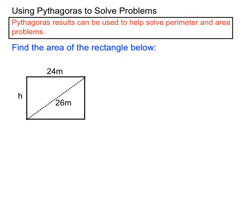This time we'll have Pythagoras helping us to find the area of this rectangle down here. Now we've got the length of the rectangle, 24 metres, and we've got the diagonal length, 26 metres. But the area of a rectangle is length times breadth. So we really need that h for height there. So we'll find that first.